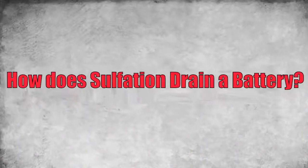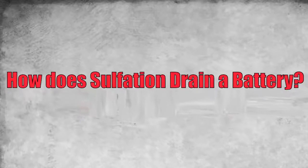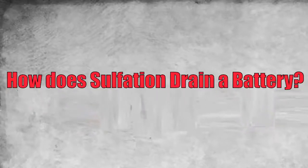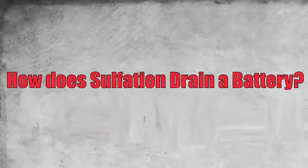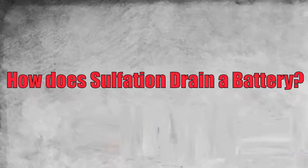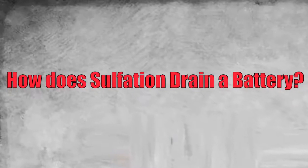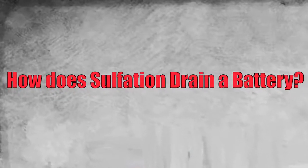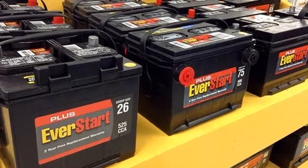How does sulfation drain a battery? On account of chemical interactions inside a lead battery, it needs to be used regularly or sulfation will take place. Sulfation interferes with the power of the battery to accept, maintain, and supply a charge, and left unchecked will render the battery useless well short of its built life. Understanding how and under what circumstances sulfation will take place, a person can take actions to stop it and extend battery life by a long time.